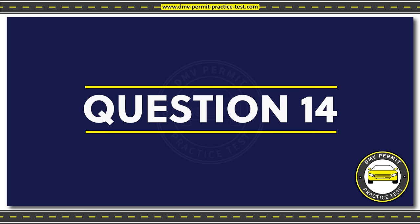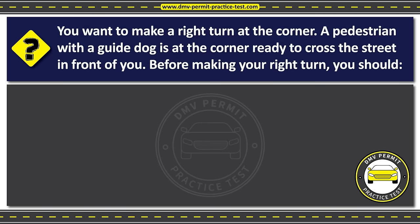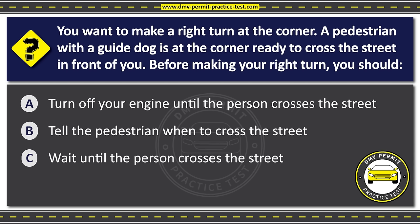Question fourteen. You want to make a right turn at the corner. A pedestrian with a guide dog is at the corner ready to cross the street in front of you. Before making your right turn, you should. Option A: Turn off your engine until the person crosses the street. Option B: Tell the pedestrian when to cross the street. Option C: Wait until the person crosses the street. The correct answer is Option C: Wait until the person crosses the street.